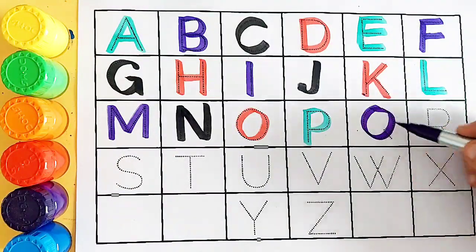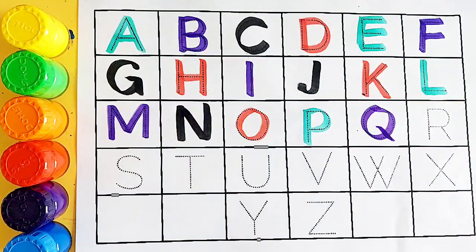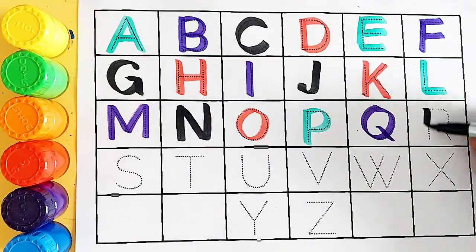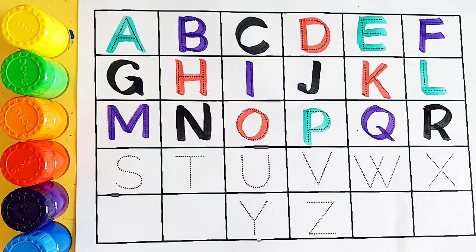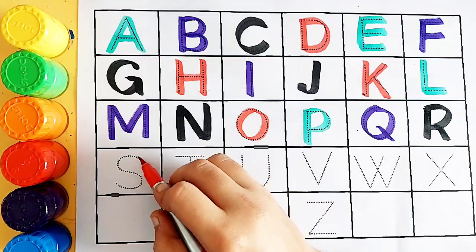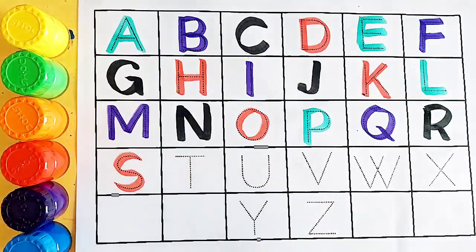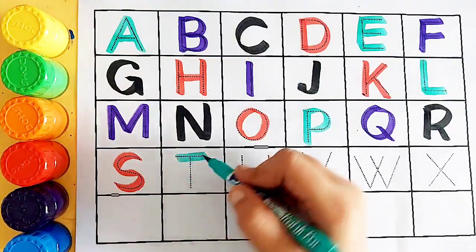Purple color, sea green color, Q. Q for queen, Q for queen. Black color, R. R for rainbow, R for rainbow. Red color, S. S for sheep, S for sheep. Sea green color.